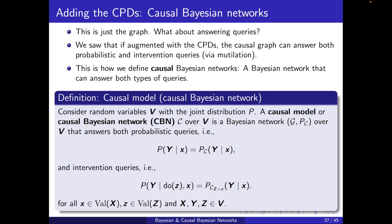Consider random variables V with joint distribution P. A causal Bayesian network (CBN) over V is a Bayesian network — with two components, a graph G and a probability distribution P_C — that answers both probabilistic queries, P of Y conditioned on X (which equals P_C of Y conditioned on X from the Bayesian network), and intervention queries: P of Y conditioned on do(Z) and X equals P of Y conditioned on X in the mutilated network. If a Bayesian network satisfies these two properties, it is a causal Bayesian network.